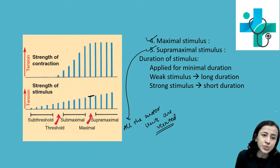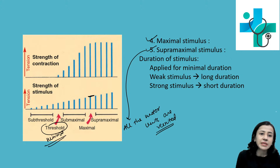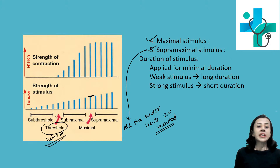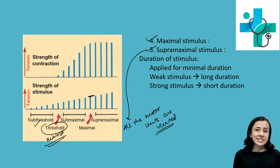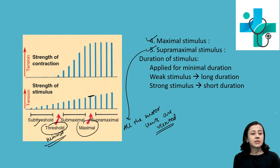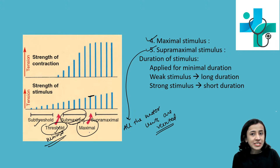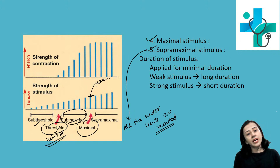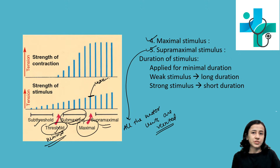To revise: threshold or minimal stimulus is the minimum required to stimulate the tissue. Sub-threshold is when stimulus is less than minimal. Submaximal is less than maximal but more than minimal. Maximal stimulus produces the maximum response. If we increase strength above maximal, we will not get an increased response — that is supramaximal stimulus.